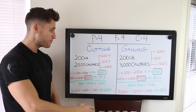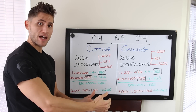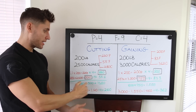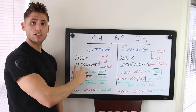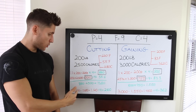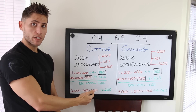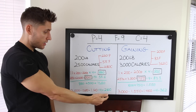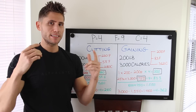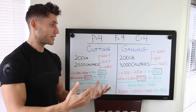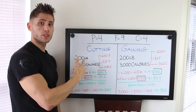Now we fill the rest with carbs. We take 880 calories from protein plus 500 calories from fat, which equals 1,380 calories accounted for. Then 2,500 minus 1,380 equals 1,120 remaining calories. Divide that by 4 for carbs and we end up with 280 grams of carbs per day. So: protein set, fat set, and we fill the rest with carbs.